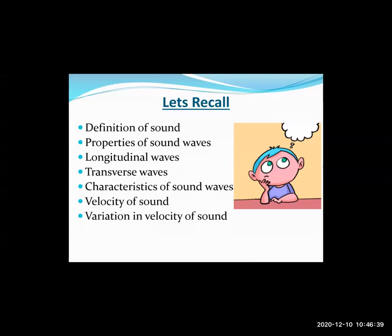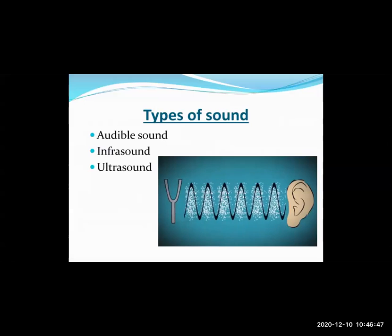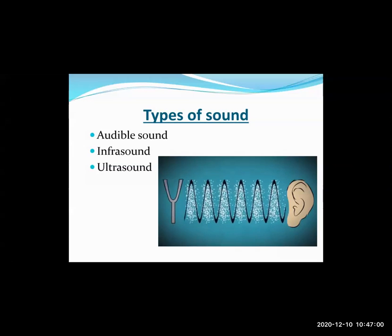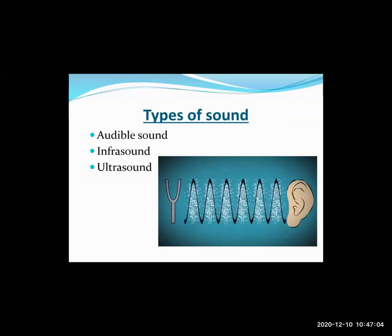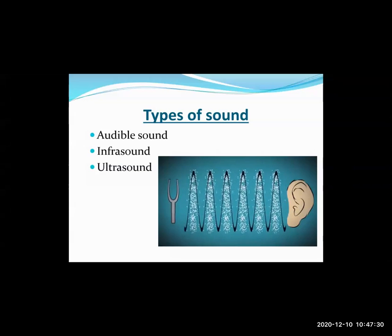Today we are going to learn a new concept relating to the types of sound. There are various types of sounds depending upon the wavelength and frequency of the sound waves. Based on their frequencies and whether they are audible to us, sound waves are classified into three main types: audible sound, infrasound, and ultrasound. Frequency is the number of waves passing a given point per unit time.